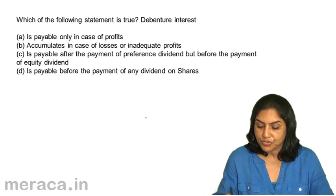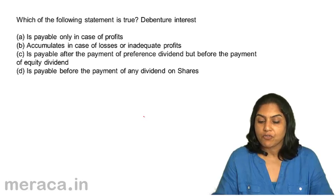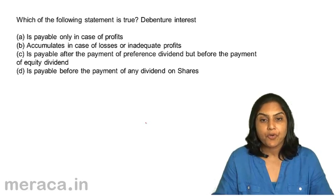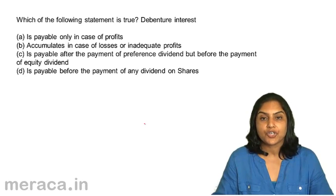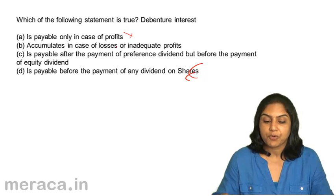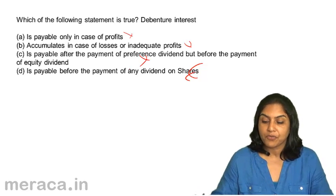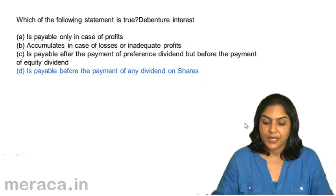Which of the following statements is true? Debenture interest: A. Is payable only in case of profits, B. Accumulates in case of losses or inadequate profits, C. Is payable after payment of preference dividend but before payment of equity dividend, D. Is payable before payment of any dividend on shares. D is correct — it is payable before payment of any dividend on shares. Debenture interest has to be paid irrespective of whether profits are made or not, and it is paid before payment of dividend. So, the correct answer is D.